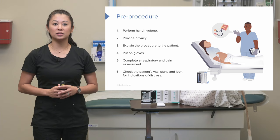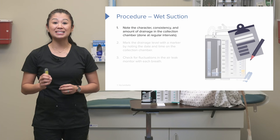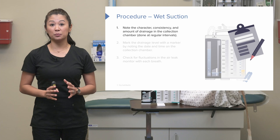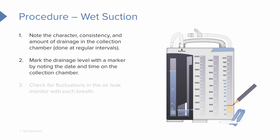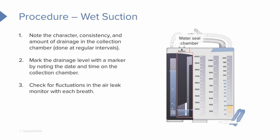With the collection system, we want to note the character, consistency, and amount of drainage in the collection chamber. This really needs to be done at regular intervals. One way we can do this is mark the drainage level with a marker on the actual system itself, noting the date and time on the collection chamber. You'll see lots of notes, marks, dates, and initials on a system that's been in use for a few days.